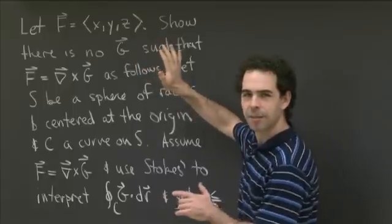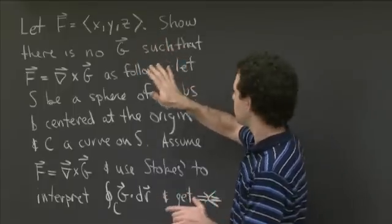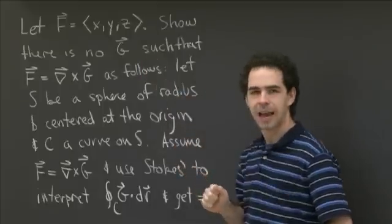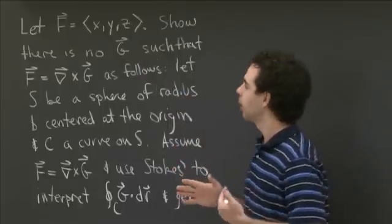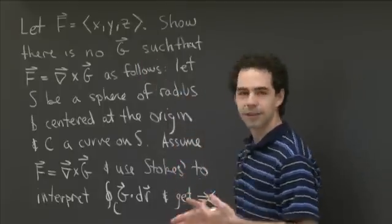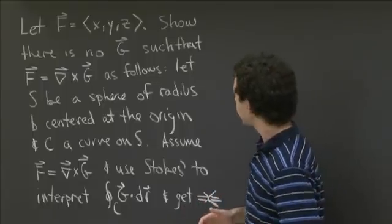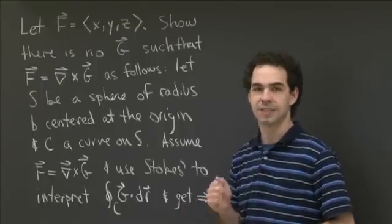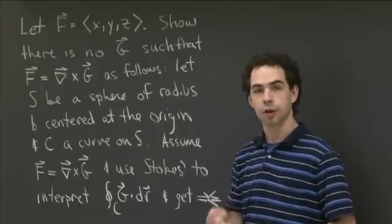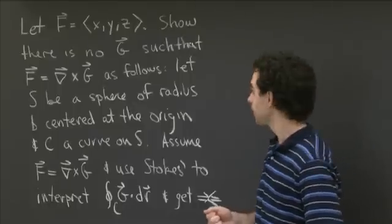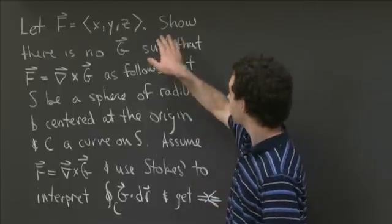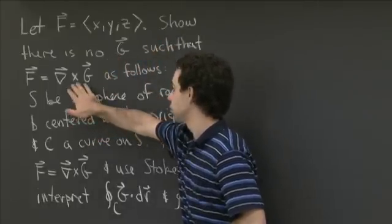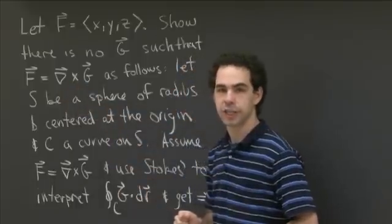I think I need to talk about it a little bit before we get started. So let's let f be the field (x, y, z). This is our radial field that we've seen a lot in recitation. What I'd like you to do is prove that this field is not the curl of any field g — show that there's no field g such that f is equal to the curl of g.